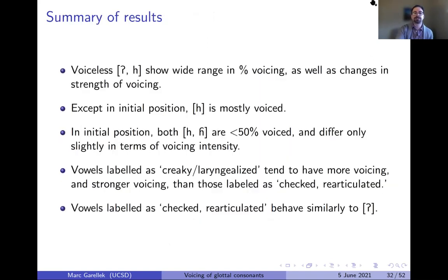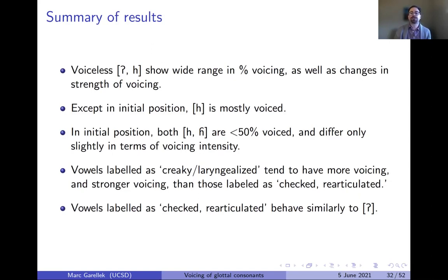To summarize the results: voiceless glottal stop and H show a wide range in percentage voicing and changes in strength of voicing. Except in initial position, voiceless H is actually mostly voiced despite being transcribed as voiceless. In initial position, both voiceless and voiced H have less than 50% voicing and differ only slightly in voicing intensity — they start and end with similar average voicing intensities. Vowels labeled as creaky or laryngealized tend to have more and stronger voicing than those labeled as checked or re-articulated, and checked and re-articulated vowels behave similarly to glottal stops in almost all respects.